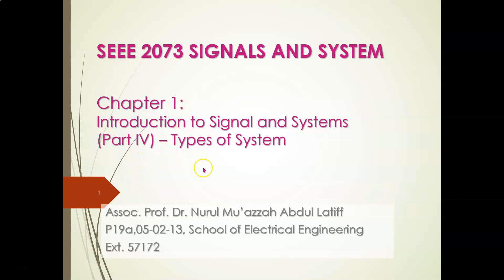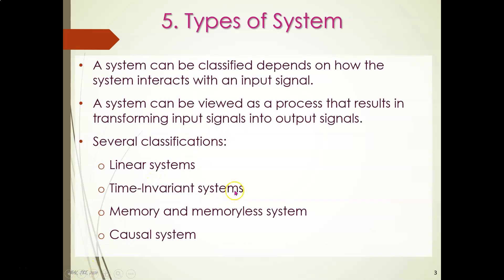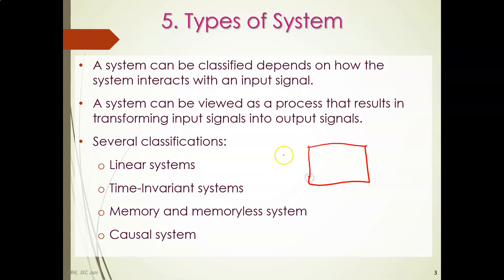Now we come to part four: types of systems, from chapter one — introduction to signals and systems. We have already learned basic functions and signals, so now we go to systems. A system can be classified depending on how it interacts with an input signal. A system will have an input signal and also an output signal, and it can modify the signal or just extract information from it. A system can be viewed as a process that transforms input signals into output signals, as shown in the block diagram with input and output.